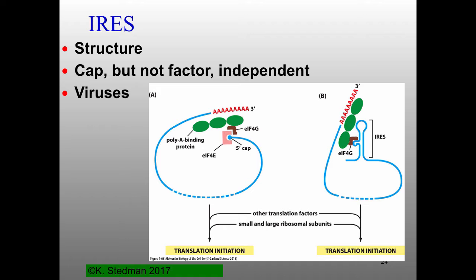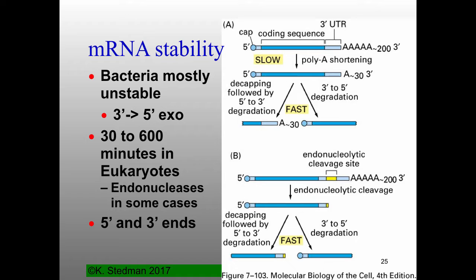Another mechanism by which cells regulate which proteins get made is by the actual stability of mRNAs — how long are mRNAs allowed to exist in the cell? In bacteria, mRNAs are made in the cytoplasm. Bacteria don't have nuclei, so they're pretty unstable because bacteria can rapidly synthesize new mRNAs to deal with rapidly changing conditions and can couple transcription and translation. They're rapidly degraded from 3-prime to 5-prime by exonuclease activity. Eukaryotes, on the other hand, have a rather large range — from half an hour to nearly ten hours — over which mRNAs are stable.